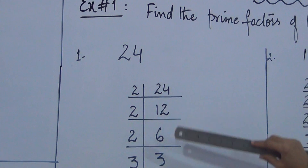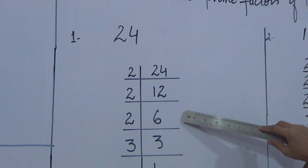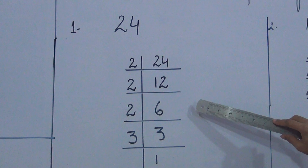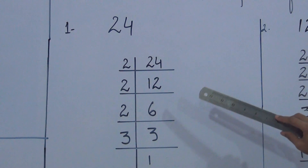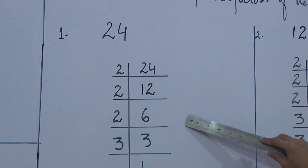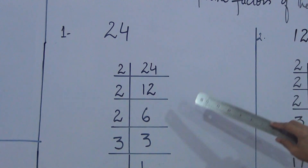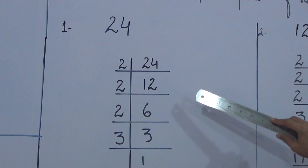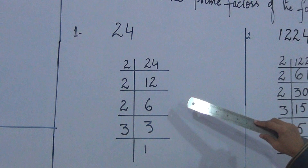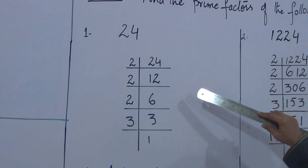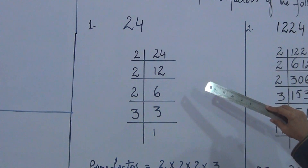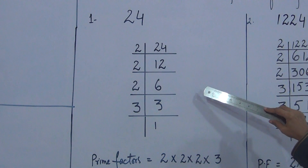The prime numbers are, as we have done on page number 38 and practiced: 2, 3, 5, 7, 11, 13.